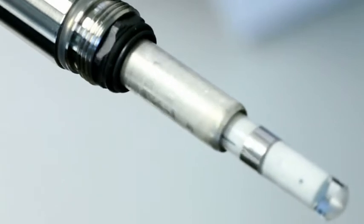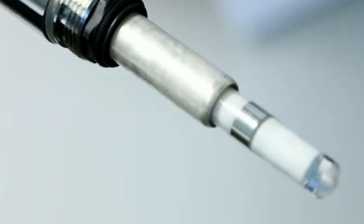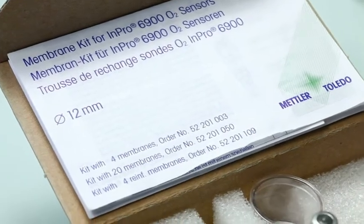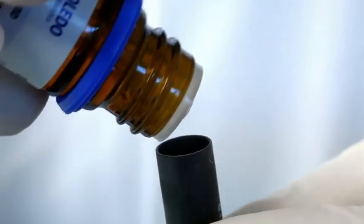New o-rings for each type of gas sensor can be found in the membrane replacement kit. Take a new membrane body from the replacement kit and half fill the cavity with the electrolyte, which is also part of the kit.